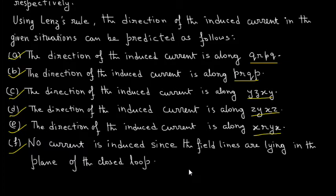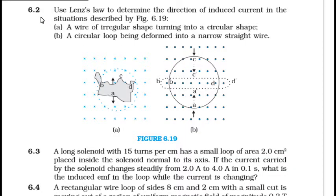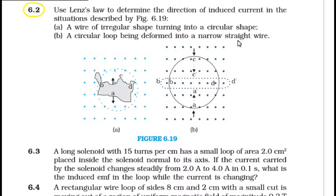Let us move to the next problem, question 6.2: using Lenz's law to determine the direction of the induced current in the situation described by figure 6.19 — a wire of irregular shape turning into a circular shape, and a circular loop being deformed into a narrow straight wire. Let us see the solution.